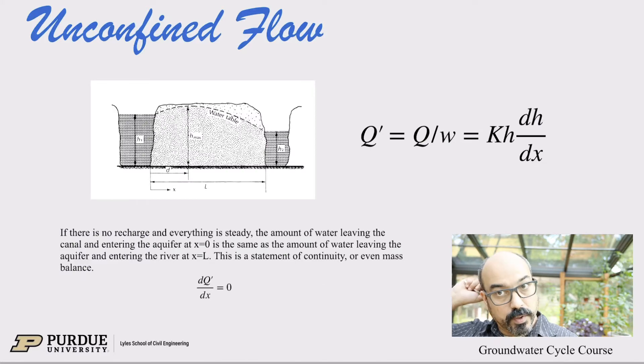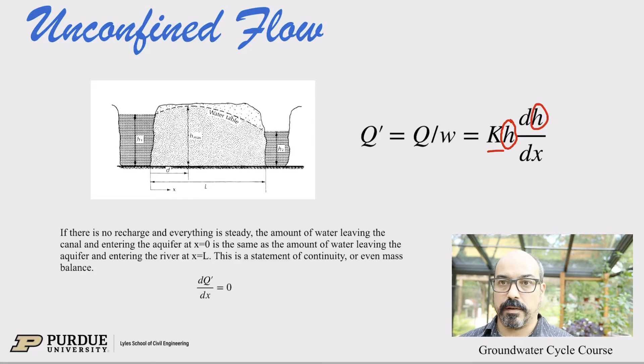Okay, so let's start. So we know what Q prime is. Q prime is Q over W, as before, but now again the problem, so Q over W is KH dh/dx. Notice that now we have H here instead of B before. Because now it's not a constant. Again, it's the same variable as this one, so now we have an issue where we carry this through the integrations and the derivations, and in the calculus, it's not a constant anymore, so we have to deal with it.